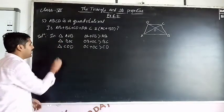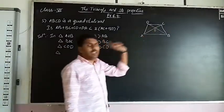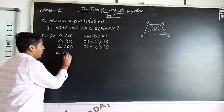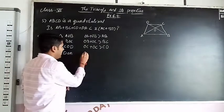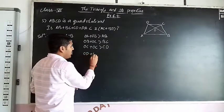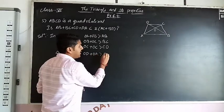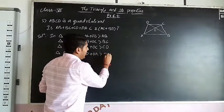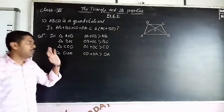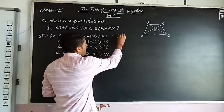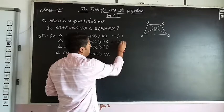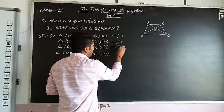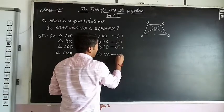Next in a triangle, last one, DOA. OD + OA is greater than DA. So these are the four equations you got. First one, second one, third one, next four.